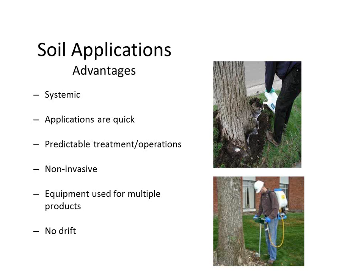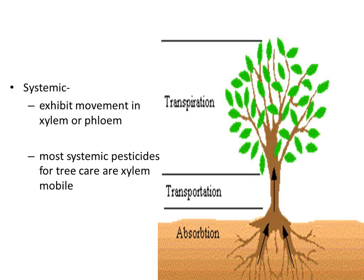These systemic applications are applied right at the base of the tree, where insecticides are absorbed by the roots and transported in the sap stream up into the above-ground parts of the tree. Most systemic pesticides for tree care are mobile in the xylem tissue. There are only a few systemic treatments that are phloem-mobile — some phosphite fungicides can move in both phloem and xylem — but our insecticides, to my knowledge, all move in the xylem tissue in the sap stream.